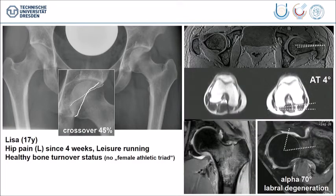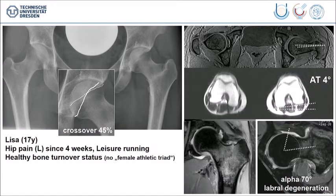When you take a closer look, she has a certain type of acetabular retroversion, a clearly decreased femoral anteversion, and a mild cam deformity. When you take all of that together, along with the labral degeneration, it is probably a reason for these stress fractures.